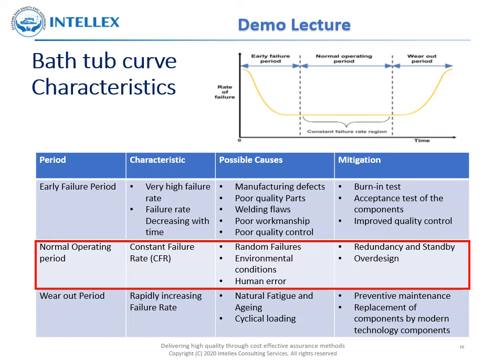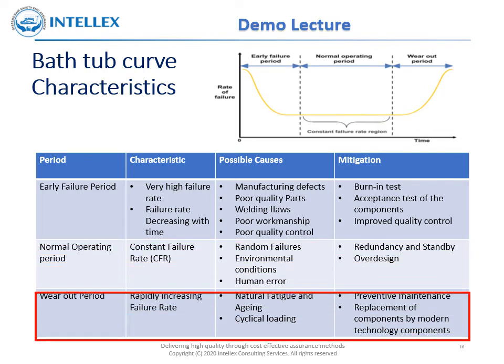The third period is the wear out period. This is characterized by a rapidly increasing failure rate. Possible causes are natural fatigue and aging, or it may also be accelerated by cyclical loading. The mitigation factors are preventive maintenance or replacement of components with modern technology components.